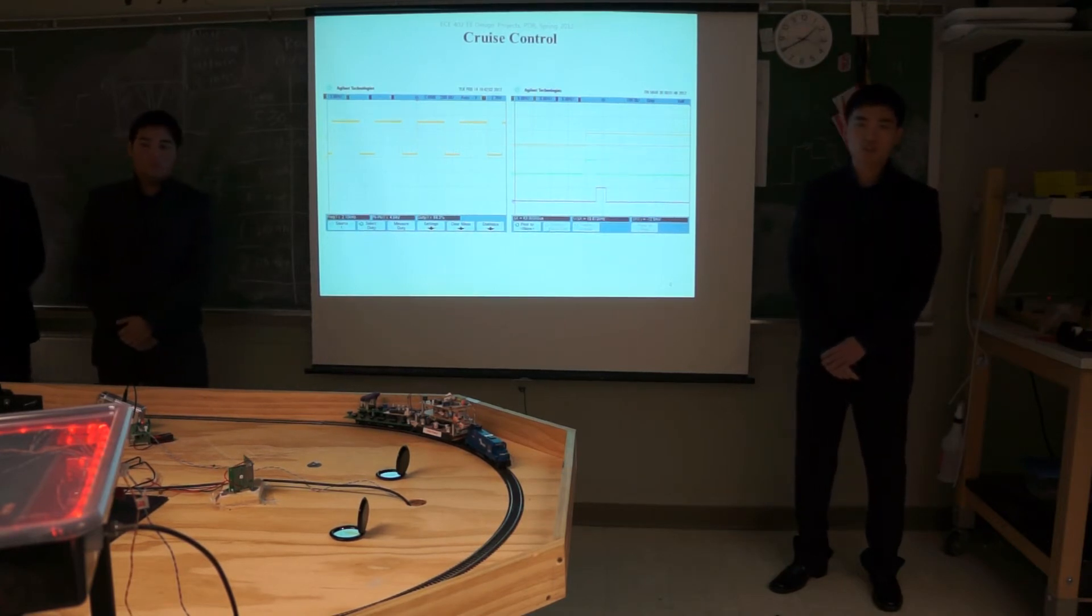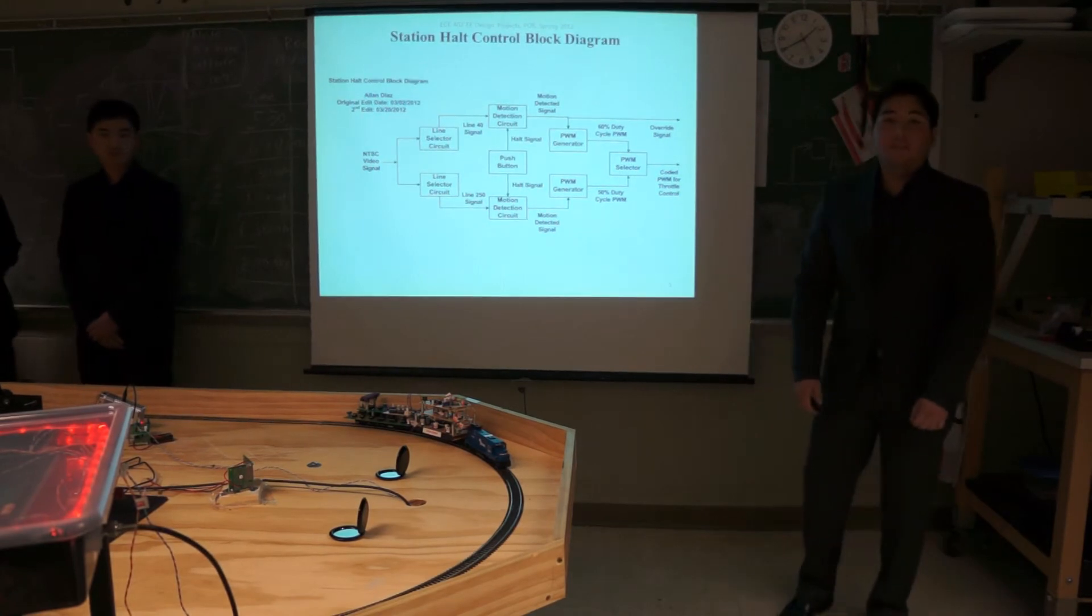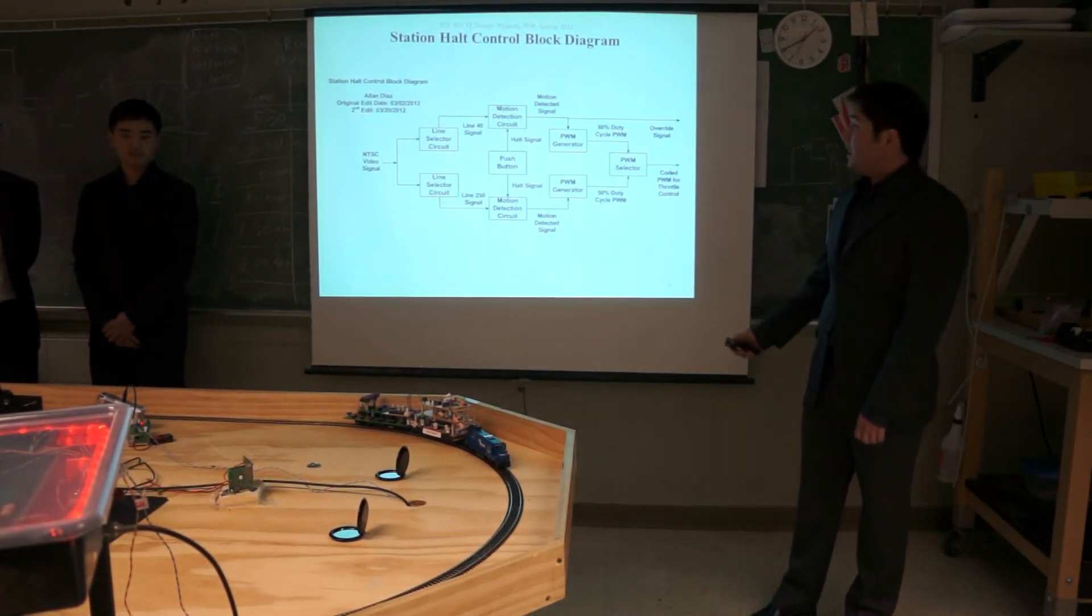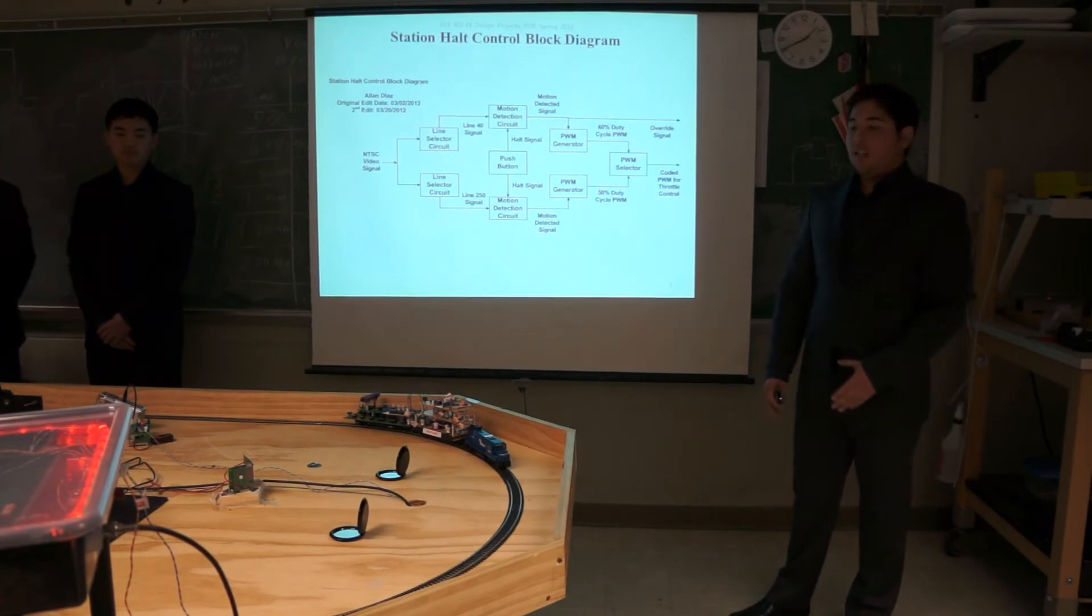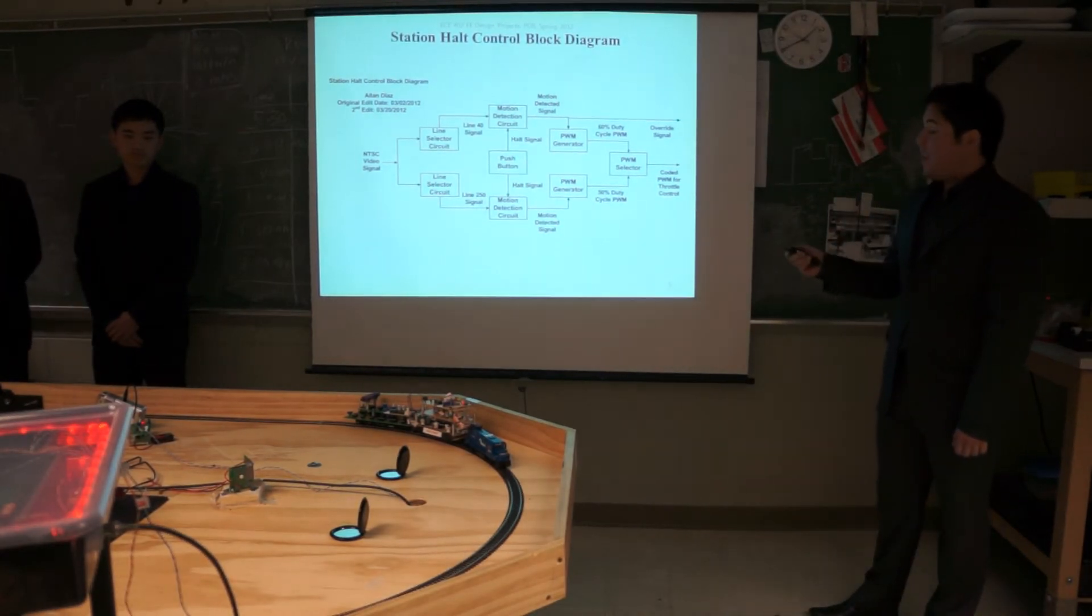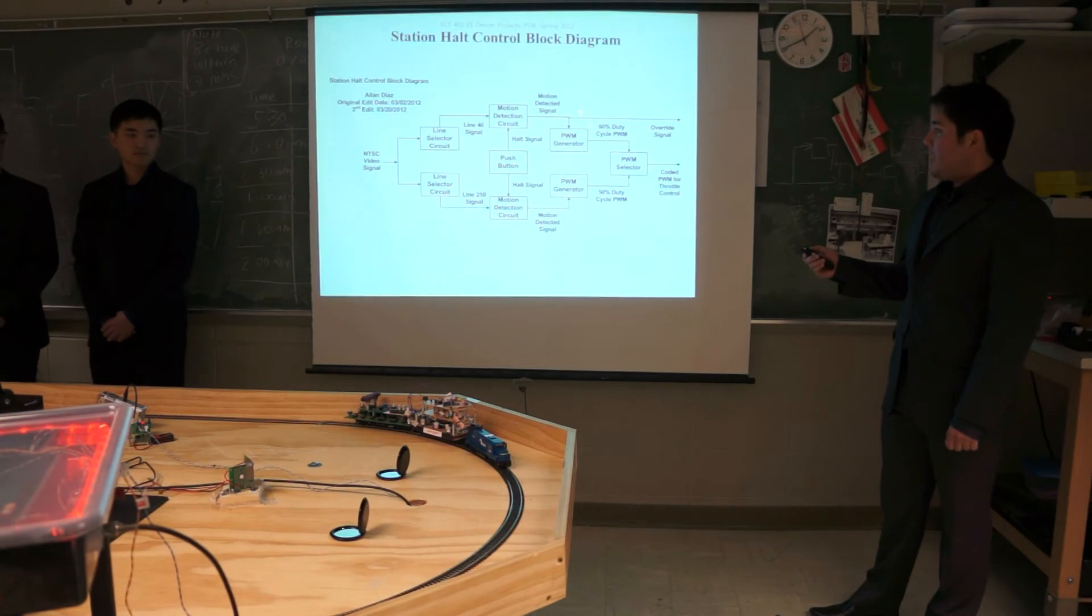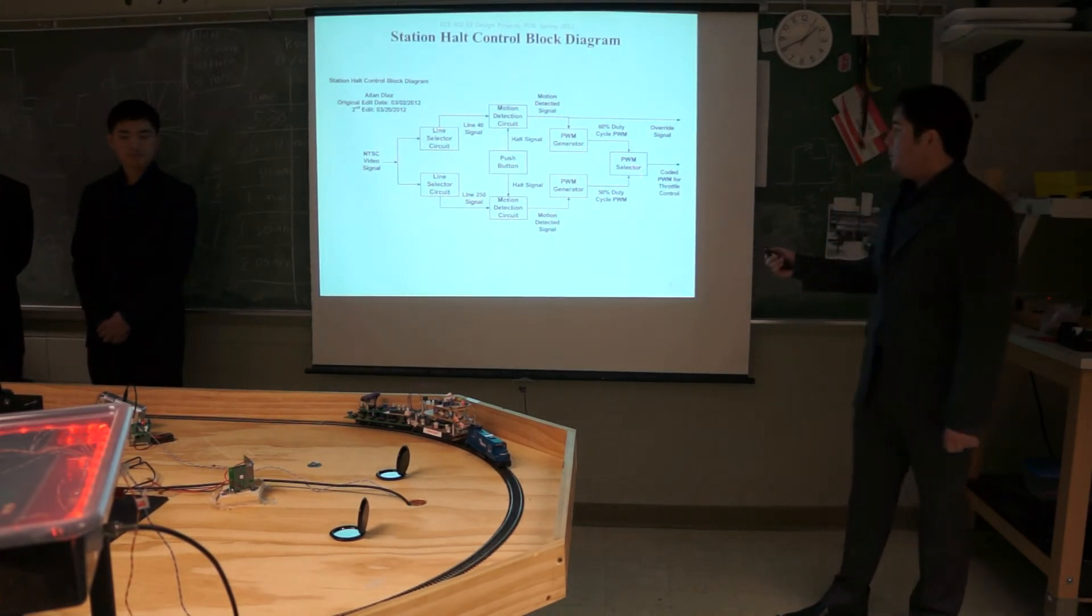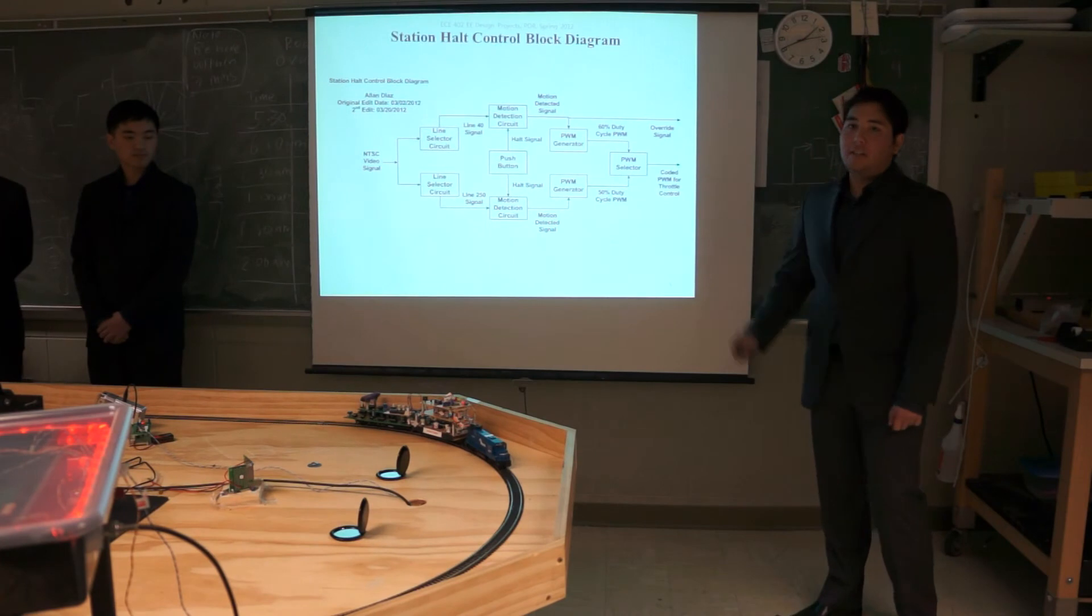Next, Alan Diaz will speak about the station halt control. The station halt control subsystem will bring the train to a control stop at a precise location in the station. The design consists of two selected lines, line 40 and 250, to give maximum space between the lines in order to slow down first and then stop. The subsystem is activated by a stop at station push button. Then in order to slow down we use a 60% duty cycle PWM and to stop a 50% duty cycle PWM. Then the PWM selector will output the correct and appropriate PWM to cruise control and the override signal to stop the train.